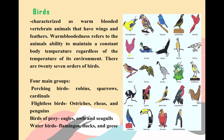Birds are characterized as warm-blooded vertebrate animals that have wings and feathers. Warm-bloodedness refers to the animal's ability to maintain a constant body temperature regardless of the temperature of its environment. There are 27 orders of birds. The four main groups are: perching birds — examples are robins, sparrows, and cardinals; flightless birds — ostriches, rheas, and penguins; birds of prey — eagles, owls, and seagulls; and water birds — flamingos, ducks, and geese.